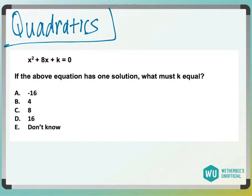Alright, so this is a quadratic: x squared plus 8x plus k equals 0. And if we have that it has one solution, which is the key to solving this, what must k equal?